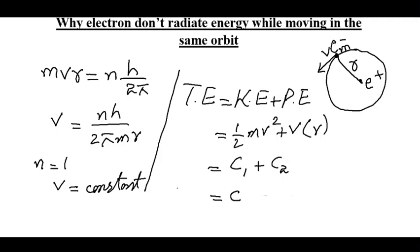So the total energy of electron while moving in this orbit will be constant due to this reason that its speed is constant and its orbit radius is constant. Thank you for watching this video, kindly subscribe this channel for more physics and mathematics videos.